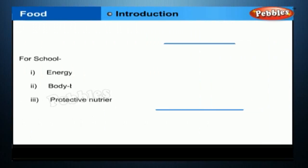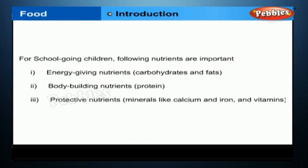For school-going children, the following nutrients are important: energy-giving nutrients — carbohydrates and fats; body-building nutrients — protein; protective nutrients — minerals like calcium and iron, and vitamins.